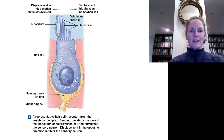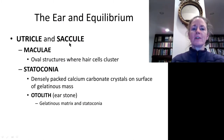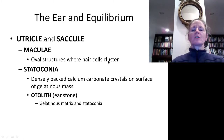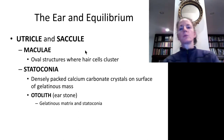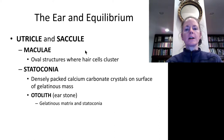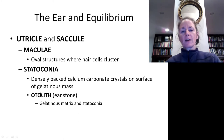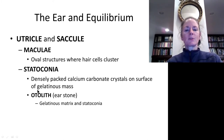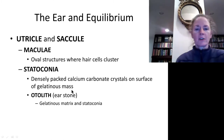Now let's look at the apparatus for static equilibrium — the utricle and saccule, located in the vestibule. Both have a spot called a macula on which the hair cells are embedded. On top of the macula is a gelatinous mass that is weighted with structures called statoconia — calcium carbonate crystals sometimes called otoliths, meaning 'ear stones,' because they're like tiny rocks.